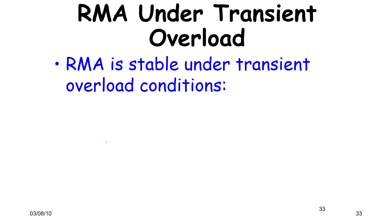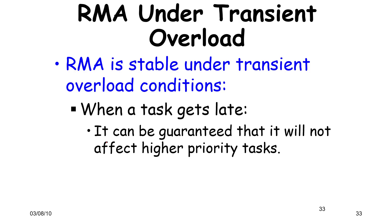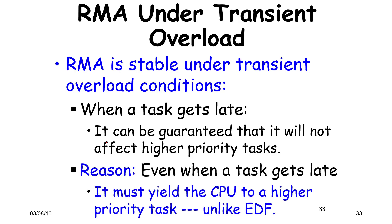Some more issues about RMA: RMA is stable under transient overload conditions. Unlike EDF, which reacted poorly to transient overloading, RMA doesn't care about dynamic priorities and is far more stable. High priority tasks are guaranteed to keep executing, unlike EDF where a task we perceive as high priority may get displaced. Even when a task gets late, it must yield the CPU to a higher priority task, which is unlike EDF. This is why RMA is considered a better bet for deterministic scheduling.